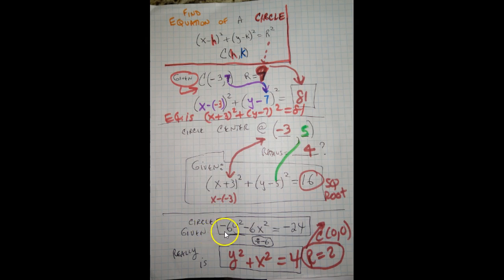If I give you the circle with a negative sign in front of y squared and a negative sign in front of x squared, divide the whole thing by negative 6, and we get x squared plus y squared equals 4. That would make a center at 0, 0, and radius 2.